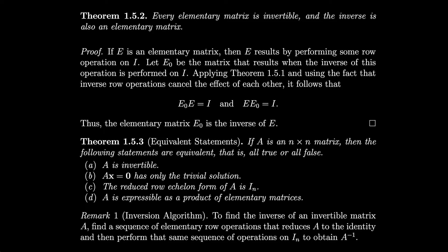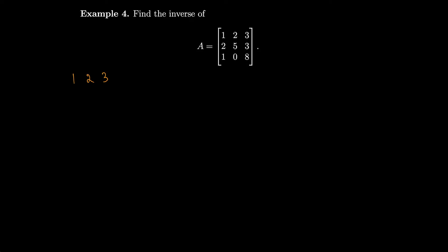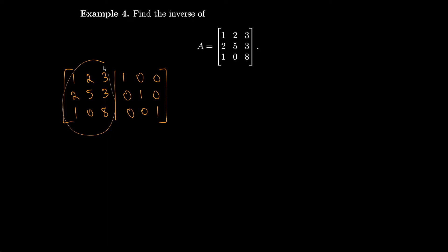To find the inverse of an invertible matrix A, find a sequence of elementary row operations that reduces A to the identity, then perform that same sequence on the identity to obtain the inverse. Let's do an example. We'll rewrite the matrix — 1, 2, 3, 2, 5, 3, 1, 0, 8 — and adjoin the 3-by-3 identity matrix with a line separating them. The goal is to reduce the left side to the identity; whatever the right side becomes will be A inverse.